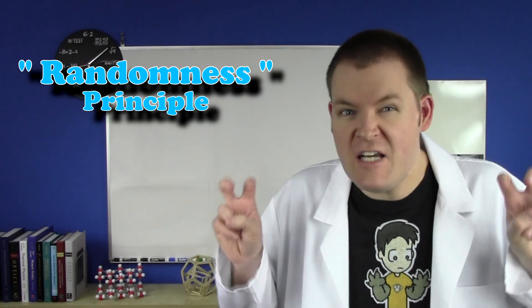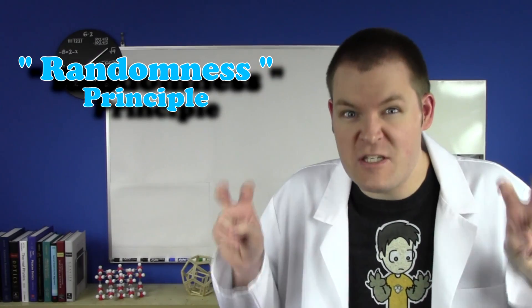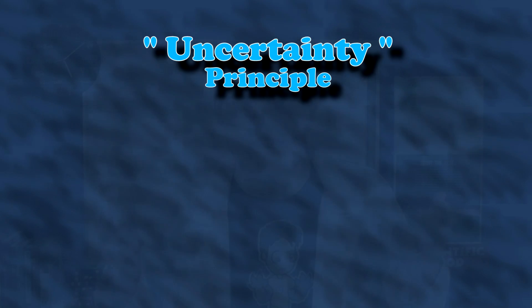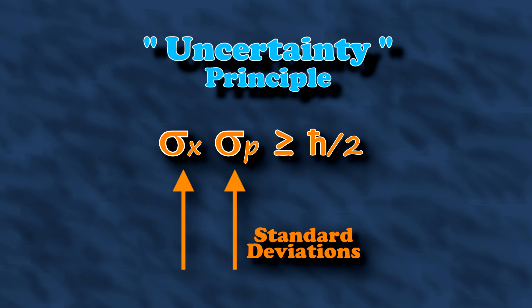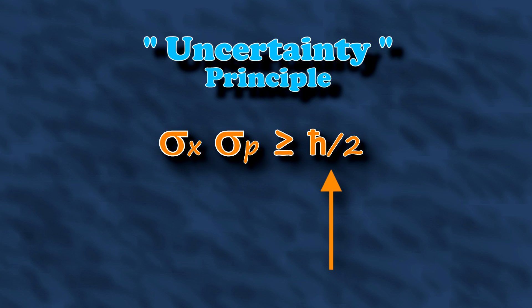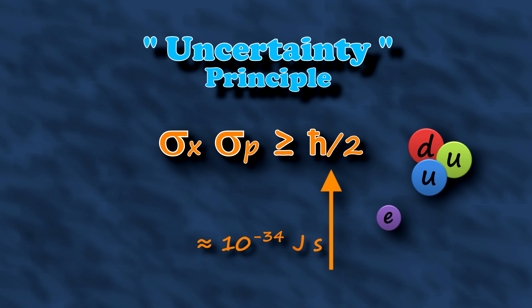It's about randomness. It should really be called the Heisenberg Randomness Principle. The proper way to write the Principle would be like this. These two things here are not uncertainties — they're standard deviations. Together, they're always bigger than this universal number. Since it's really small, we don't ever notice it in everyday life. It's only important for really tiny things like protons and electrons.